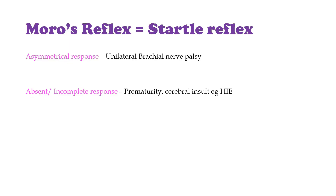Moro's reflex is also referred to as the startle reflex. An asymmetrical Moro's reflex suggests unilateral brachial nerve palsy, and an absent or incomplete Moro's reflex may be seen in prematurity or in patients with cerebral insults like hypoxic ischemic encephalopathy.